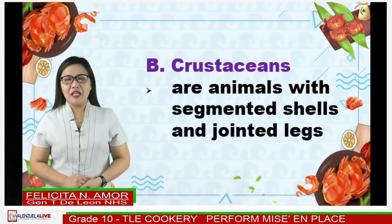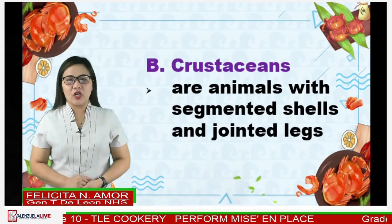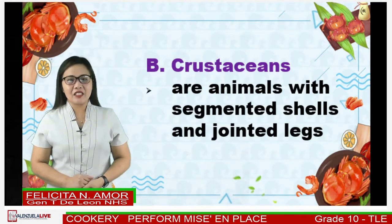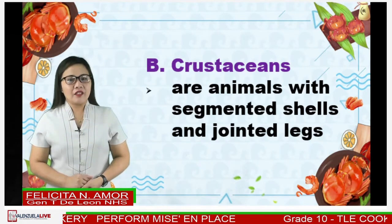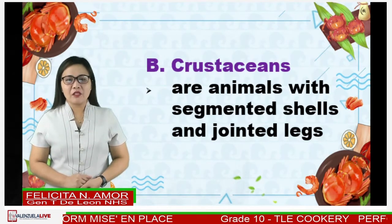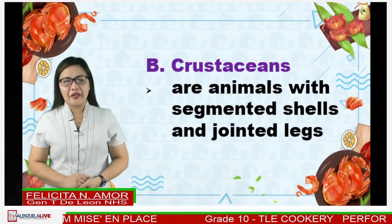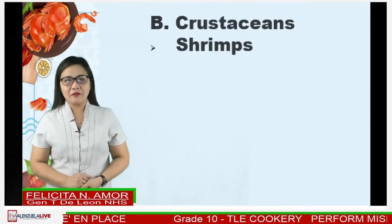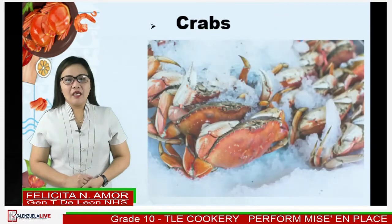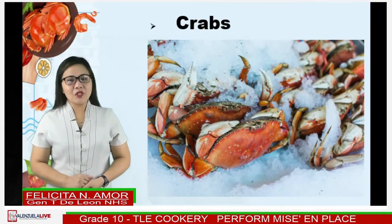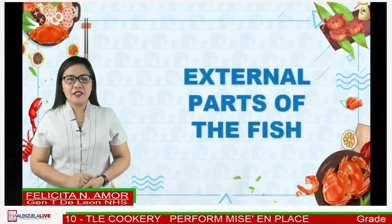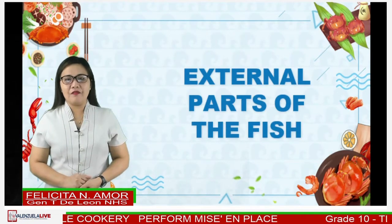The second category of shellfish is crustaceans. These are sea animals with segmented shells and jointed legs. They have shells that act as a shield. They turn red in color when cooked, which is much desirable for shellfish. Examples are shrimps, crabs, lobsters, and prawns.